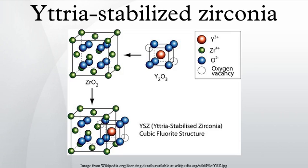Thermal expansion coefficient. The thermal expansion coefficients depend on the modification of zirconia as follows: monoclinic — 7×10⁻⁶ per °C; tetragonal — 12×10⁻⁶ per °C; Y2O3 stabilized — 10.5×10⁻⁶ per °C.